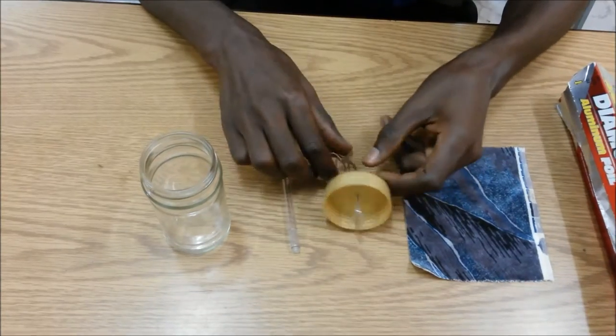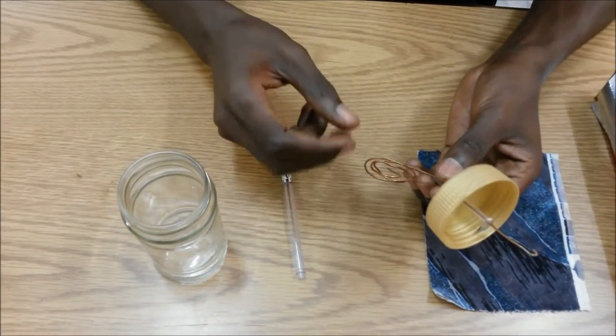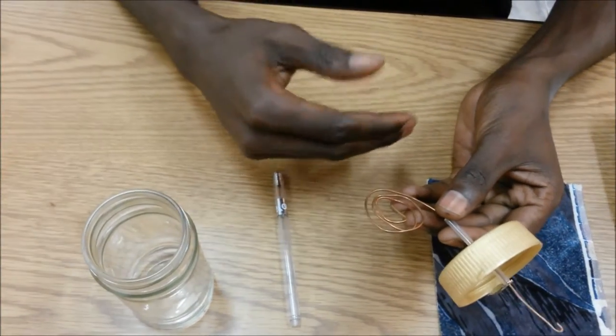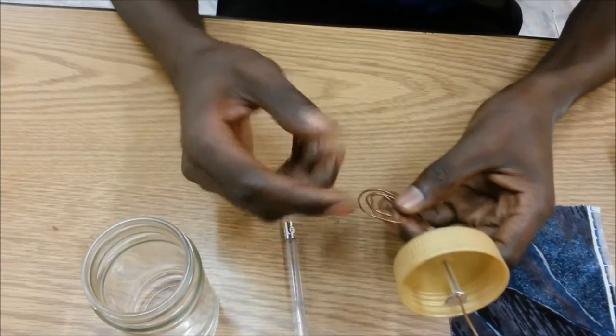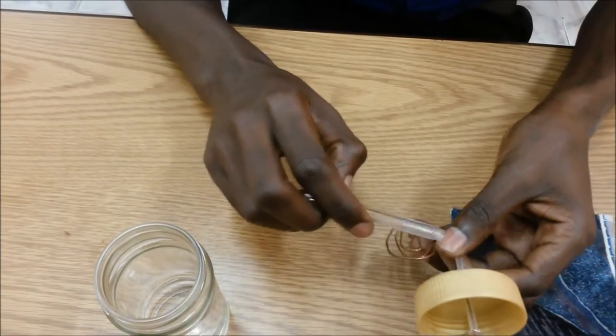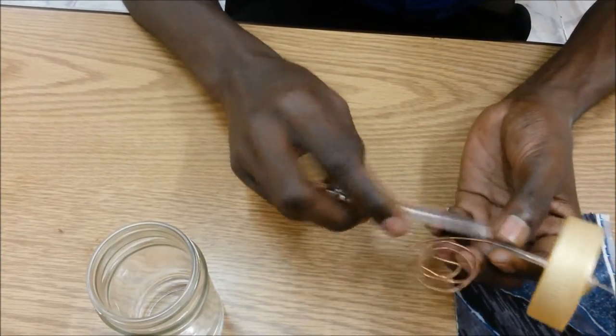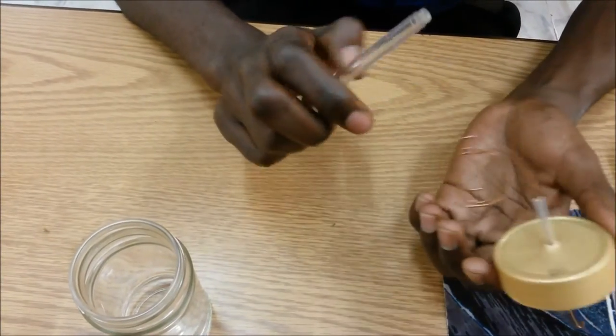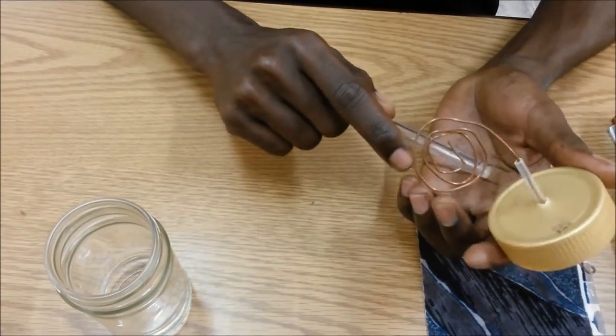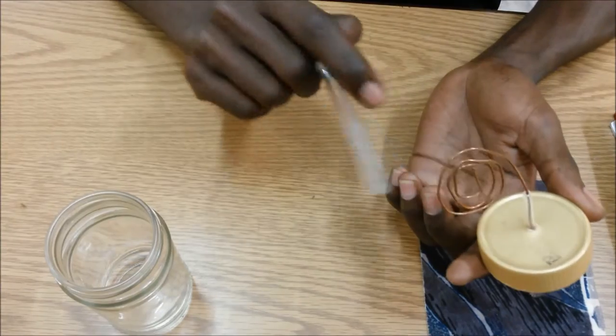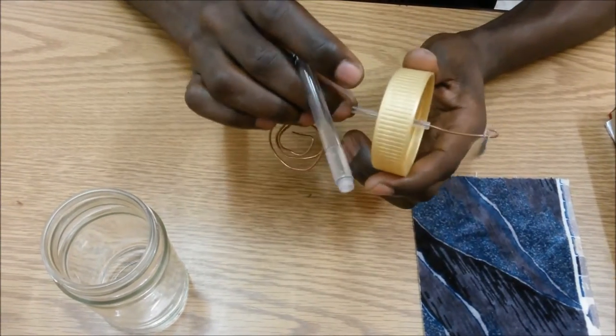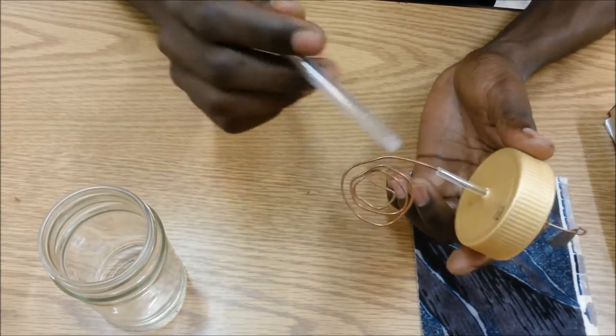So the first thing I did was to get the copper wire and coil it to increase the surface area. Then once I did that, I took this ink tube from outside this pen here, I took the ink tube, and I cut it down a certain length, and then I bored the jar lid of the coffee jar, and then I pushed the ink tube inside there.